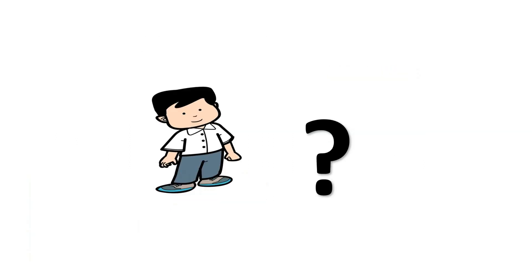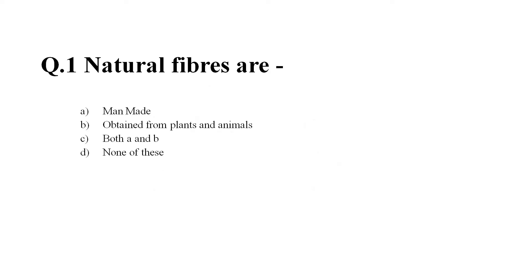Now let us revise what we have learnt today by solving some questions. Question number one: Natural fibers are — Option A: manmade; Option B: obtained from plants and animals; Option C: both A and B; Option D: none of these. The right answer is Option B — obtained from plants and animals.